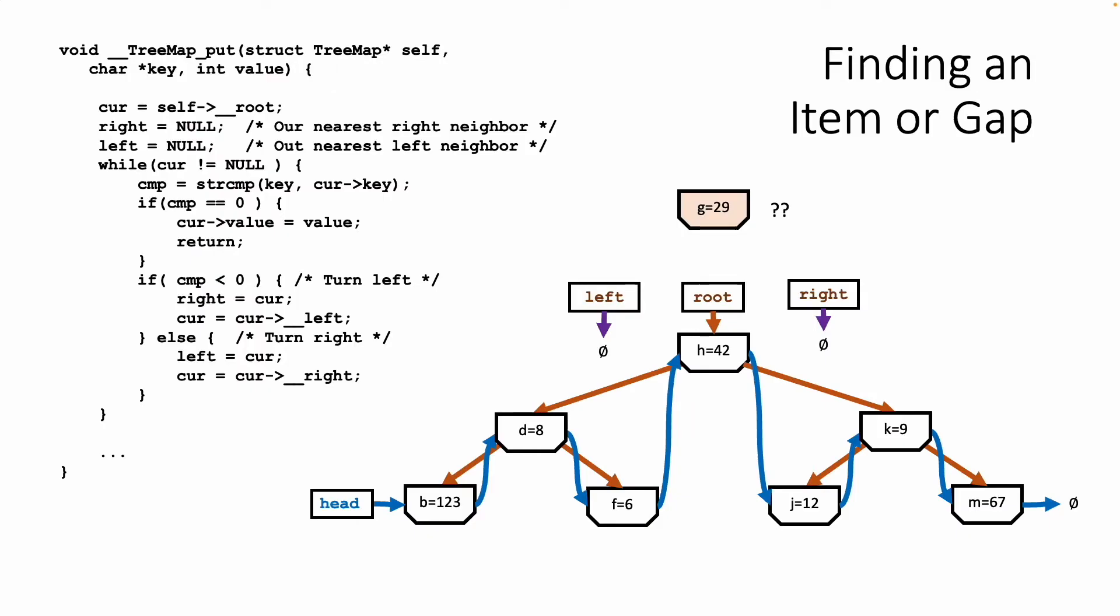Here we go. We've got this tree, g equals 29. We're going to insert it. We compare it to h equals 42, and we say, oh, that's a turn to the left. So now we know, at least at this point, the smallest greatest value is h. And so we point right at h as we are moving down the tree. You see that - you do the string compare, you see what it says. If comp is less than zero, we're going to turn left, and then right is going to point at cur where we were.